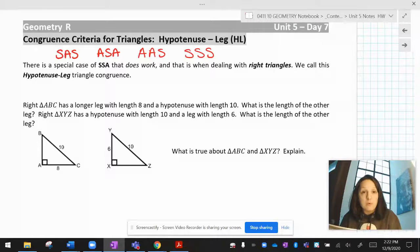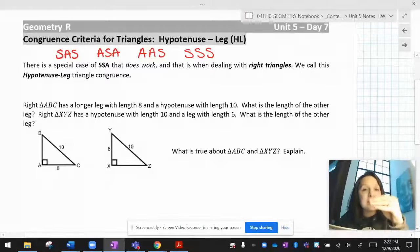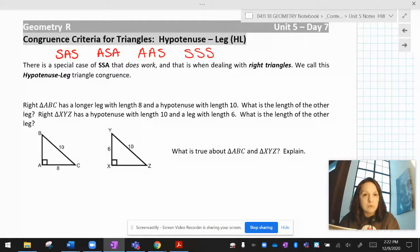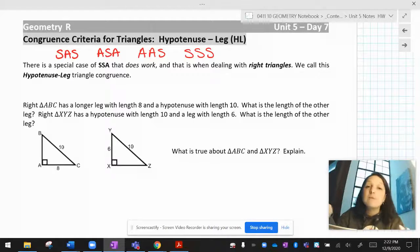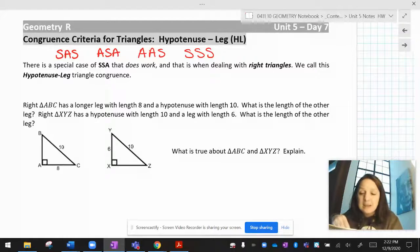After we prove them congruent, we could use that CPCTC thing. Make sure you never prove triangles congruent based on CPCTC. That's not a thing. CPCTC has to come after congruent triangles. Now here's the thing. Before we said ASS is not a thing. Not even if you call it SSA so that it doesn't sound like a bad word. It's not a thing.